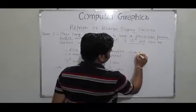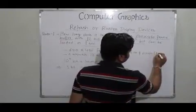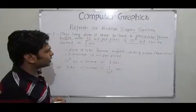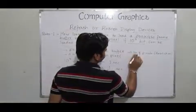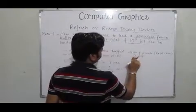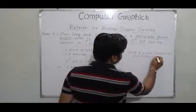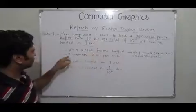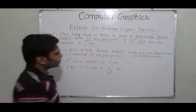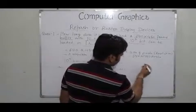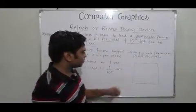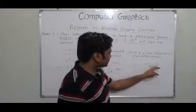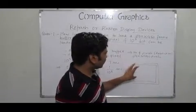From this given data, we can determine the number of pixels, that is the resolution. As covered in the last lecture, the formula for resolution is the product of the number of pixels in the horizontal direction and the vertical direction. This entire picture on the screen requires one frame buffer.